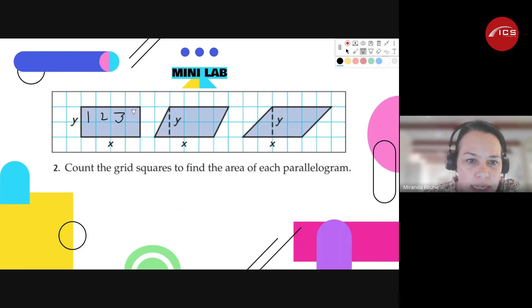One, two, three, four, five, six, seven, eight. So, the area of each parallelogram equals eight. Okay?